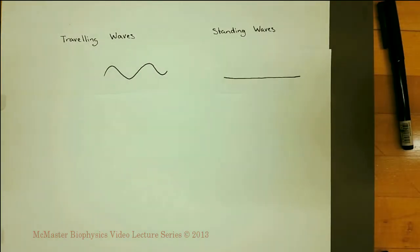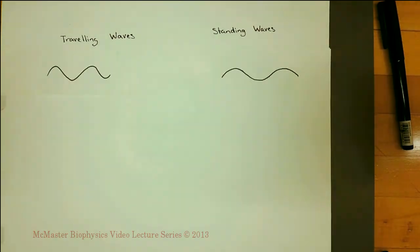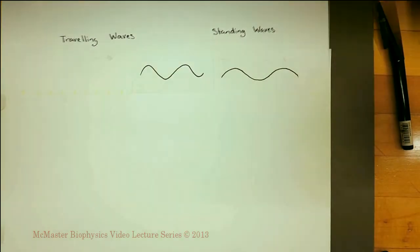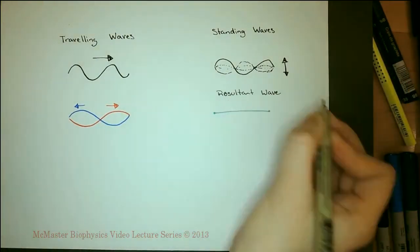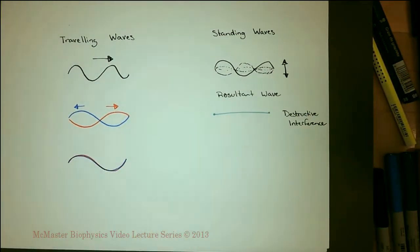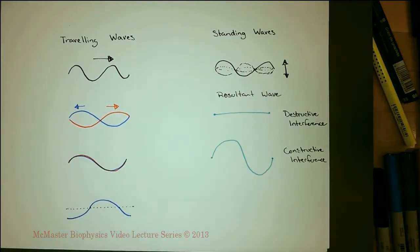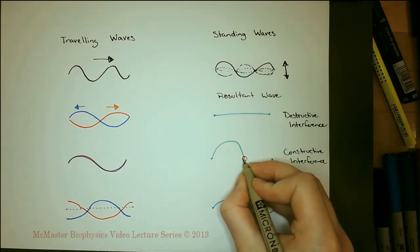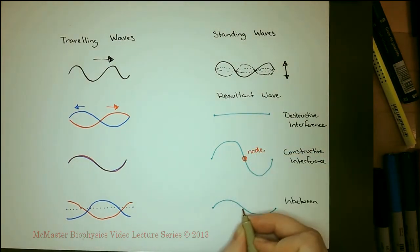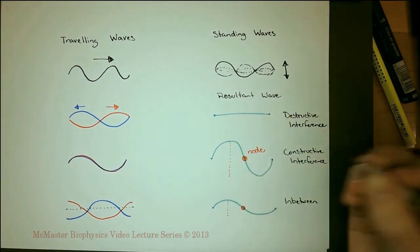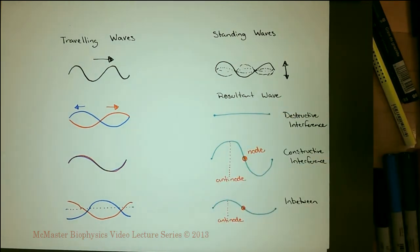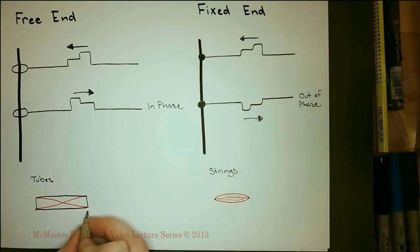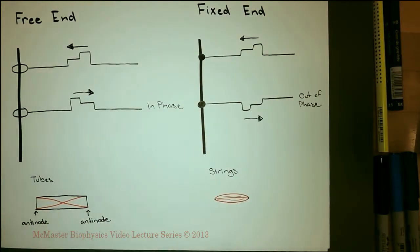Traveling waves move through a medium. Standing waves stay in the same place. Traveling waves are caused by the interference of the reflected and initial waves in a medium. The traveling waves that make up a standing wave move between constructive and destructive interference with each other. A node is a point on a standing wave where there is no displacement. An anti-node is a point on a standing wave of maximum displacement. Fixed ends of standing waves are at a node; free ends are at an anti-node.